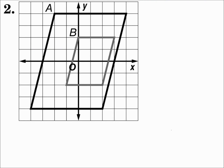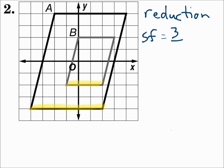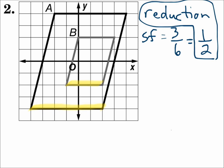Number 2: from A to B it got smaller, so that's a reduction. To find the scale factor, which is new length over old length, we do have horizontal segments we can use. A new length on B is 3, and that corresponds with an old length on A, which is 6. New over old is 3 over 6, which is one half. So the scale factor is one half. When the scale factor is between 0 and 1, it's a reduction, and one half is between 0 and 1.